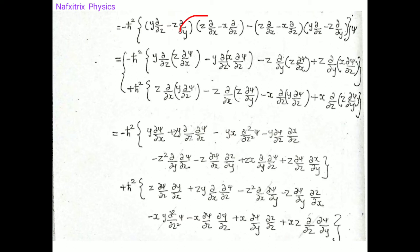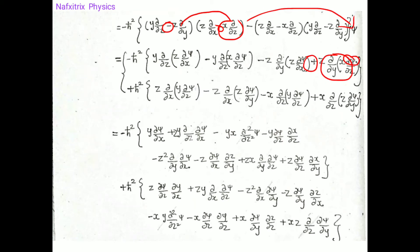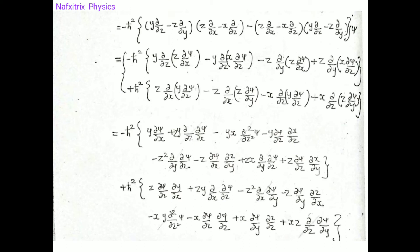In a similar fashion, -z·(∂/∂y) operates on the term (∂/∂x), giving one term. Then -z·(∂/∂y) operates on x·(∂/∂z): minus times minus gives plus, so we have +z·(∂/∂y)·x·(∂/∂z) acting on psi. Continuing in this fashion we accumulate all terms.